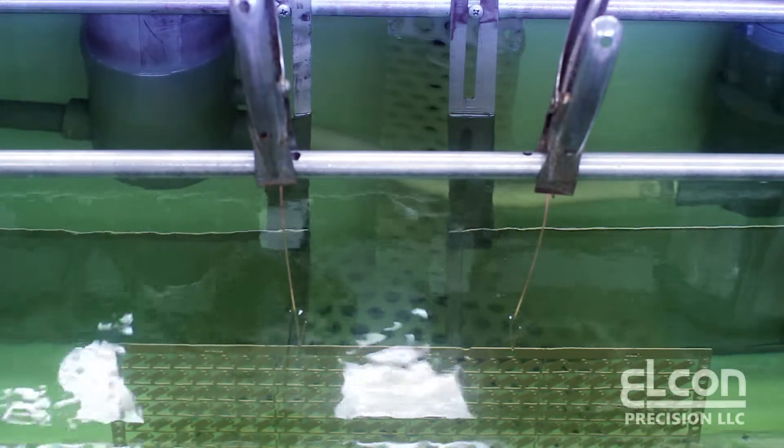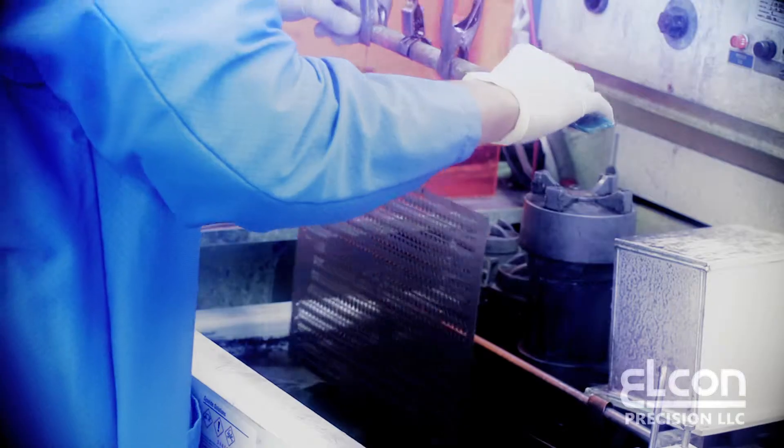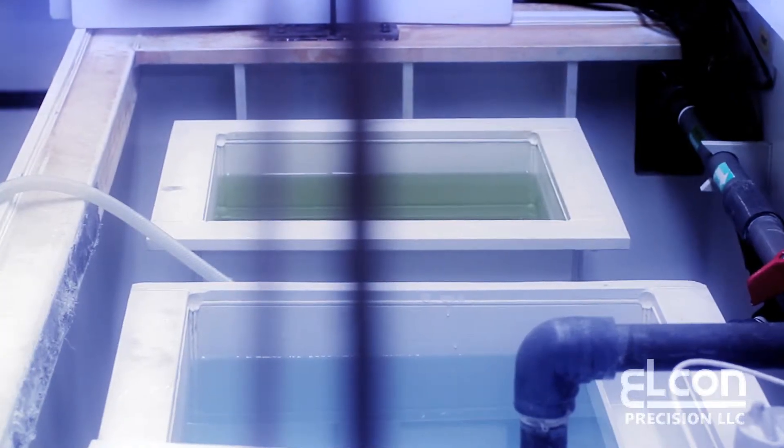Elkhorn cleans and plates most metal substrates with gold, silver, nickel, or copper coatings. These are done both with electrolytic and electroless chemistries.